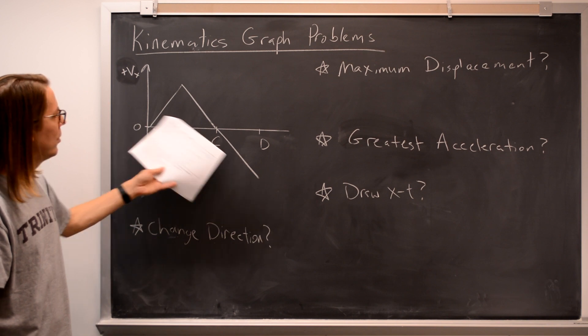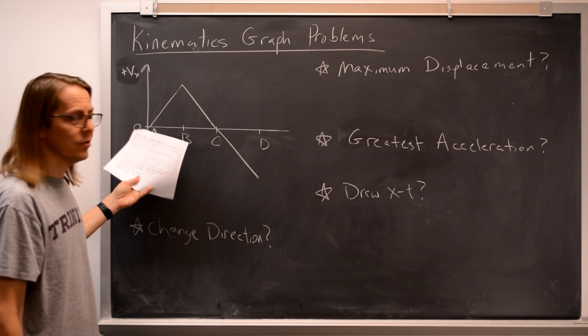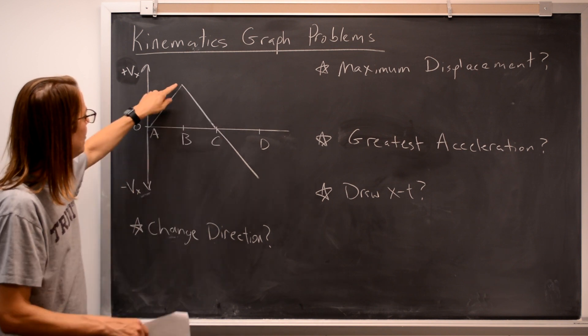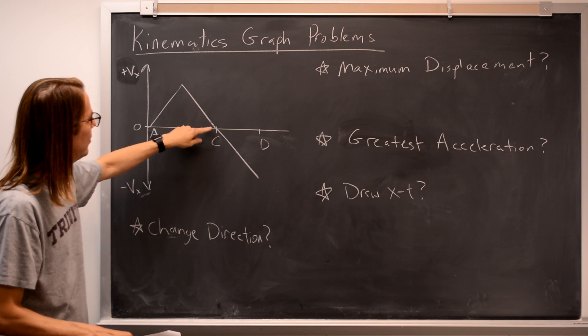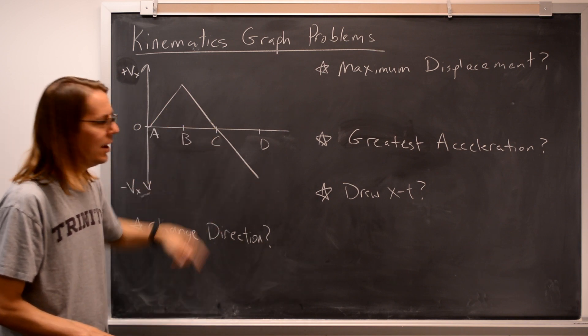So here is one graph. It's velocity versus time. It starts at the origin, so zero velocity, increases from A to B, and then at B it turns around and decreases the velocity down and back to zero at C, and the velocity goes negative out to D.